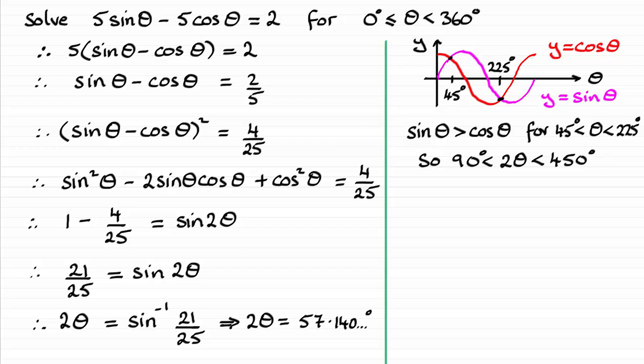Now if we draw a quadrant diagram, we're looking for where sine is a positive value. And we should be familiar with this: that sine is a positive value in the first quadrant and the second quadrant. So in the usual way, we draw two lines equally inclined to the horizontal. We'll mark those angles in as being exactly the same, and they will be that 57.140 and so on degrees.